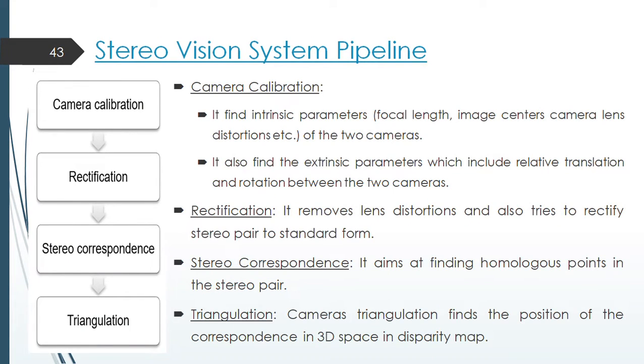Stereo vision pipeline. For obtaining depth information through stereo vision, we have to follow this sequence of steps in the pipeline. First comes camera calibration. It finds intrinsic parameters like focal length, image centers of camera lens and distortions in the camera lens. It also finds the extrinsic parameters which include relative translation and rotation between the two cameras. Image is a 2D representation of a 3D real world scene. The mapping of 3D real world coordinates to the 2D image coordinates is done by a series of transformations. The goal of camera calibration is to determine these parameters for these transformations.